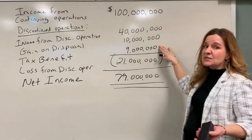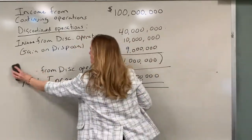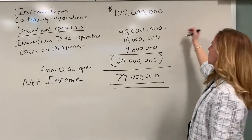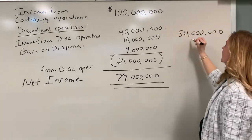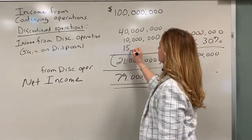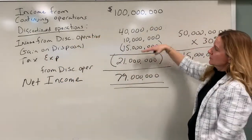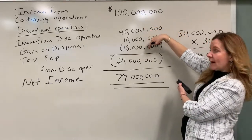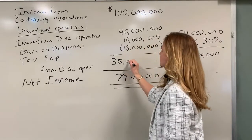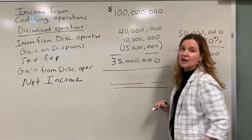Because we now have income instead of a loss, we won't have a tax benefit — that only applies to losses, which are tax deductible. Instead, we calculate the tax expense on the discontinued operation. We have $40 million income plus the $10 million gain on disposal, totaling $50 million. Multiplying by 30% gives $15 million of tax expense, recorded as a negative. So: $40 million plus $10 million minus $15 million equals a $35 million gain from discontinued operations. Adding that to income from continuing operations gives a new net income of $135 million.